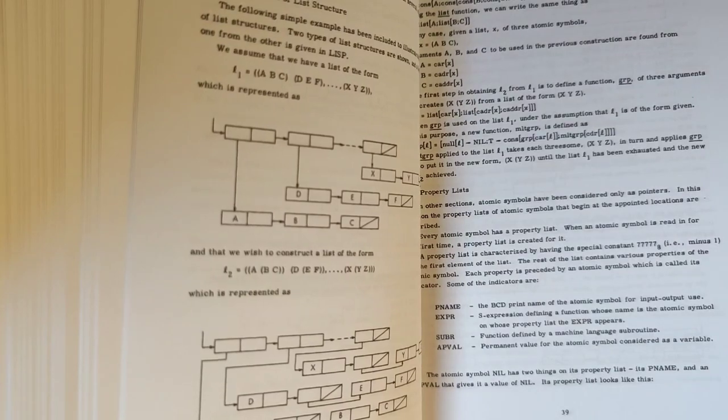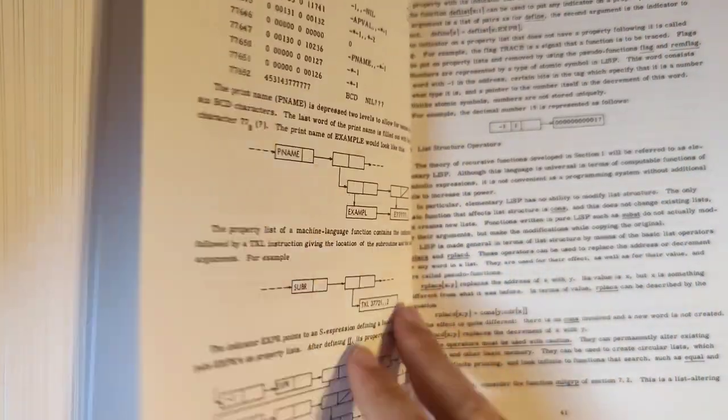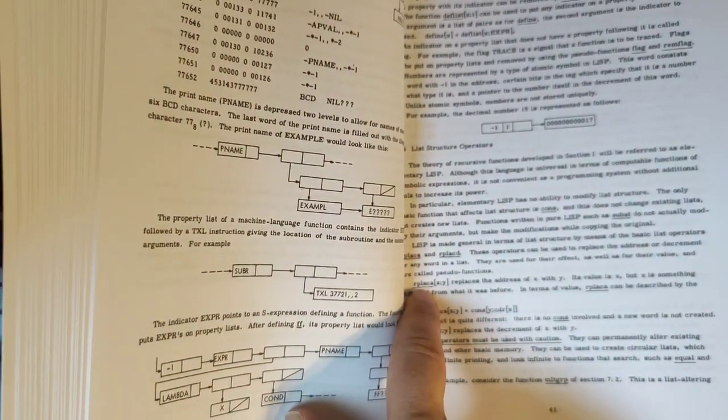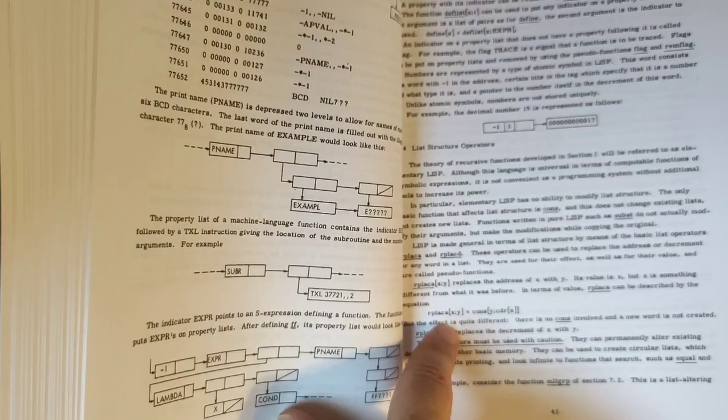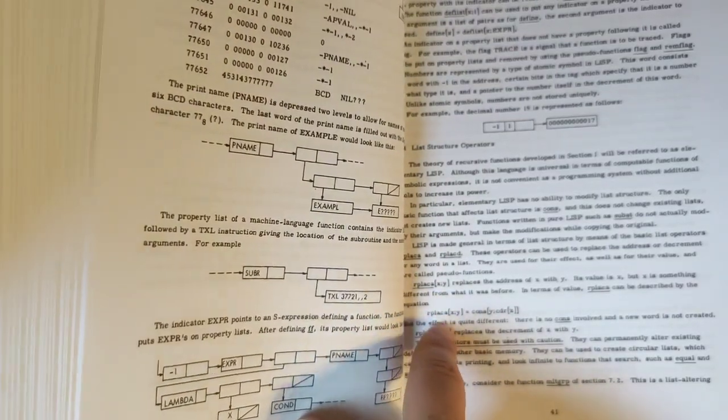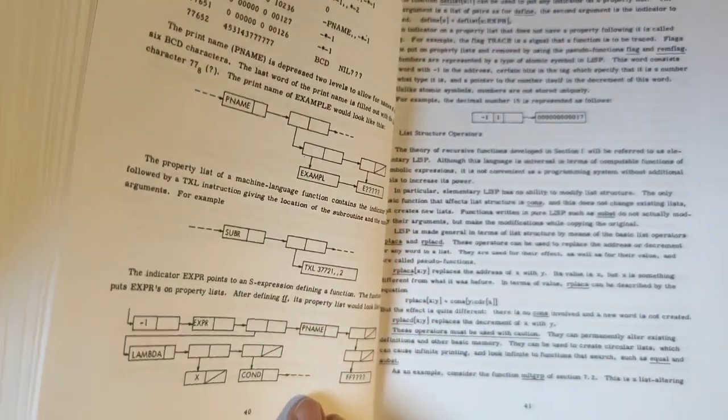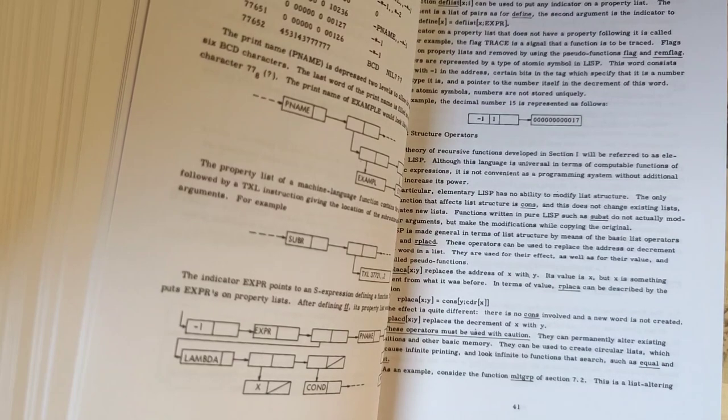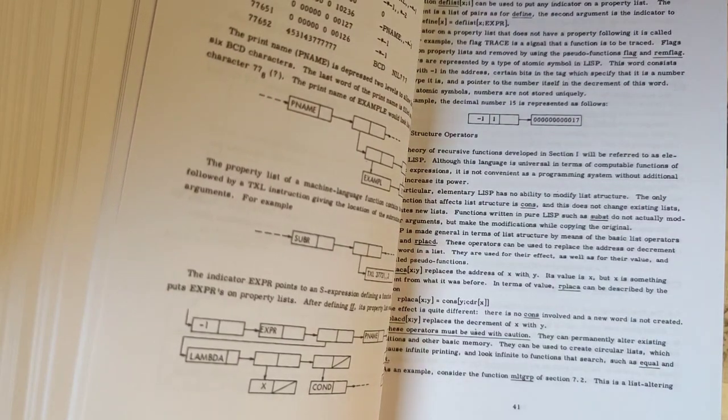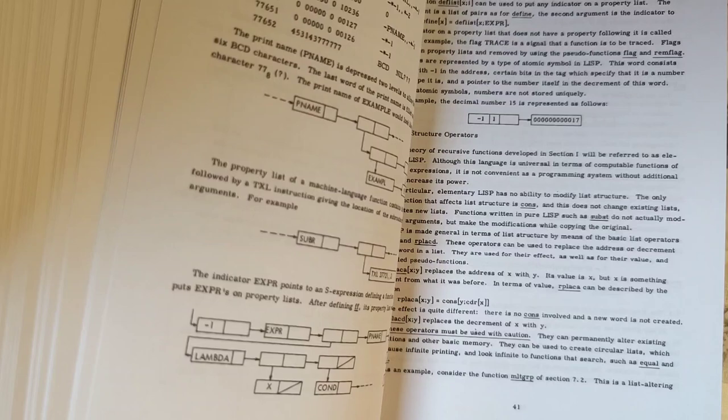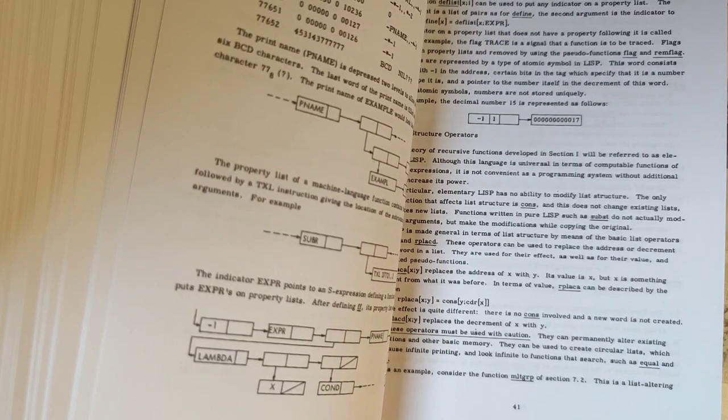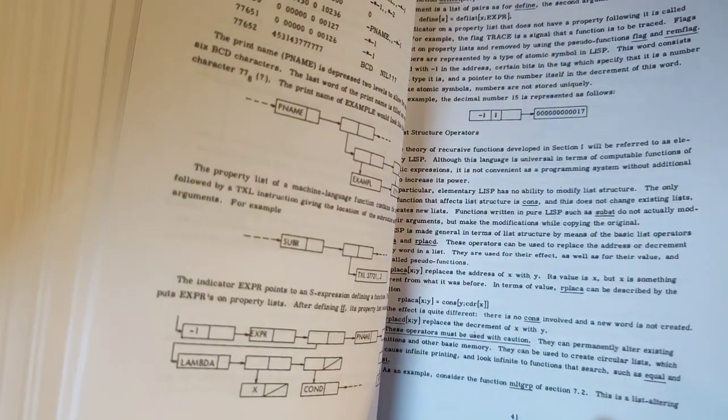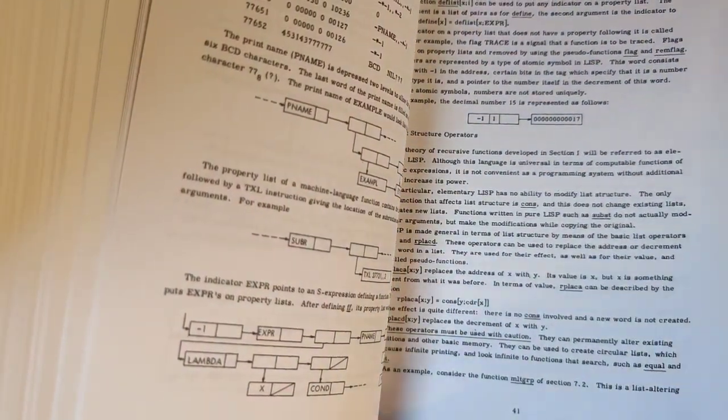Now, they are introducing then later, rplaca and rplacd, these ones where you're setting basically the car and the cdr of pairs to something else. And they do warn you that you can create circular lists, which are going to create issues with printing and equal operation and substitution, basically anything which crawls along a list, which when it encounters a circular list, will treat it as infinite.